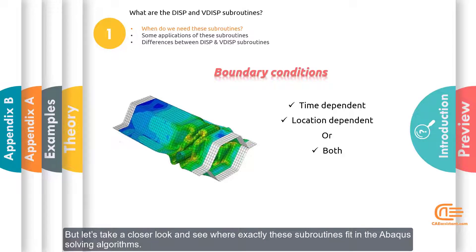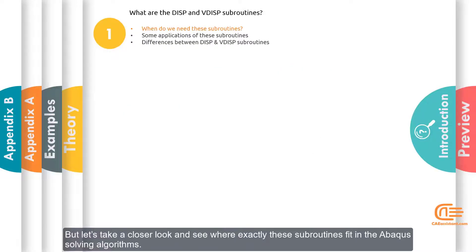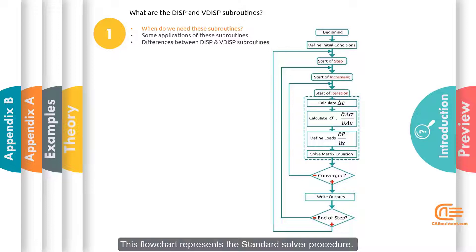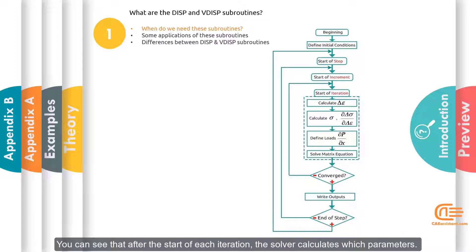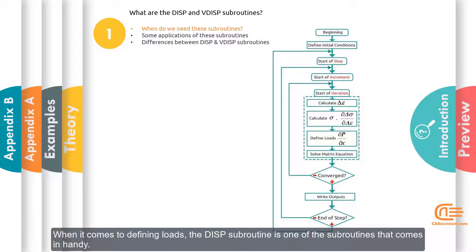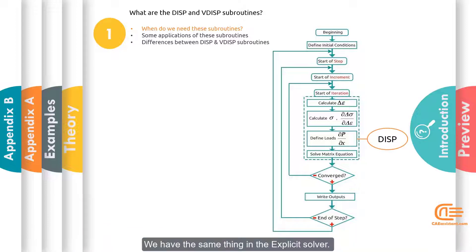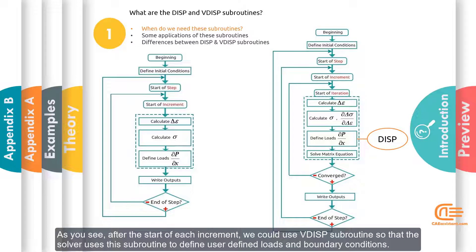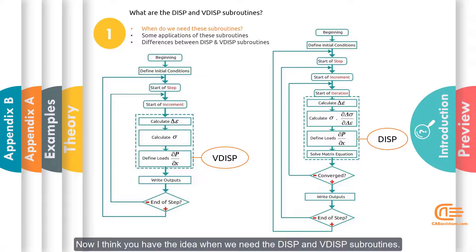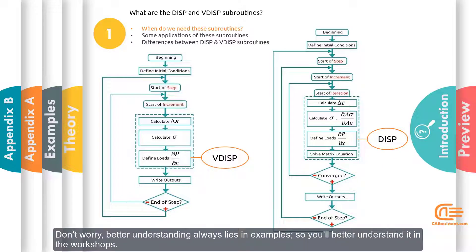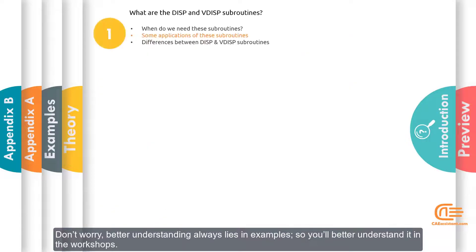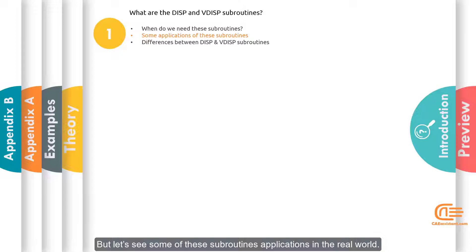Let's take a closer look and see where exactly these subroutines fit in the Abacus solving algorithms. This flowchart represents the standard solver procedure. You can see that after the start of each iteration, the solver calculates certain parameters. When it comes to defining loads, the DISP subroutine is one of the subroutines that comes in handy. We have the same thing in the explicit solver — after the start of each increment, we could use the VDISP subroutine to define user-defined loads and boundary conditions. Now, better understanding always lies in examples, so let's see some of these subroutines' applications in the real world.